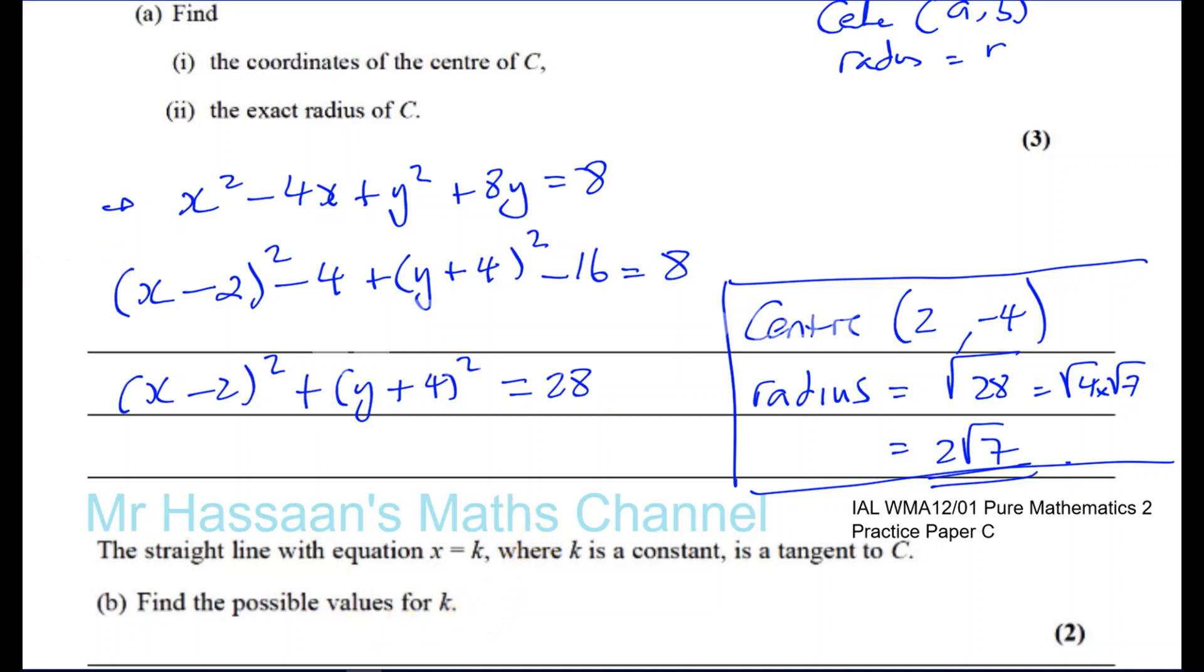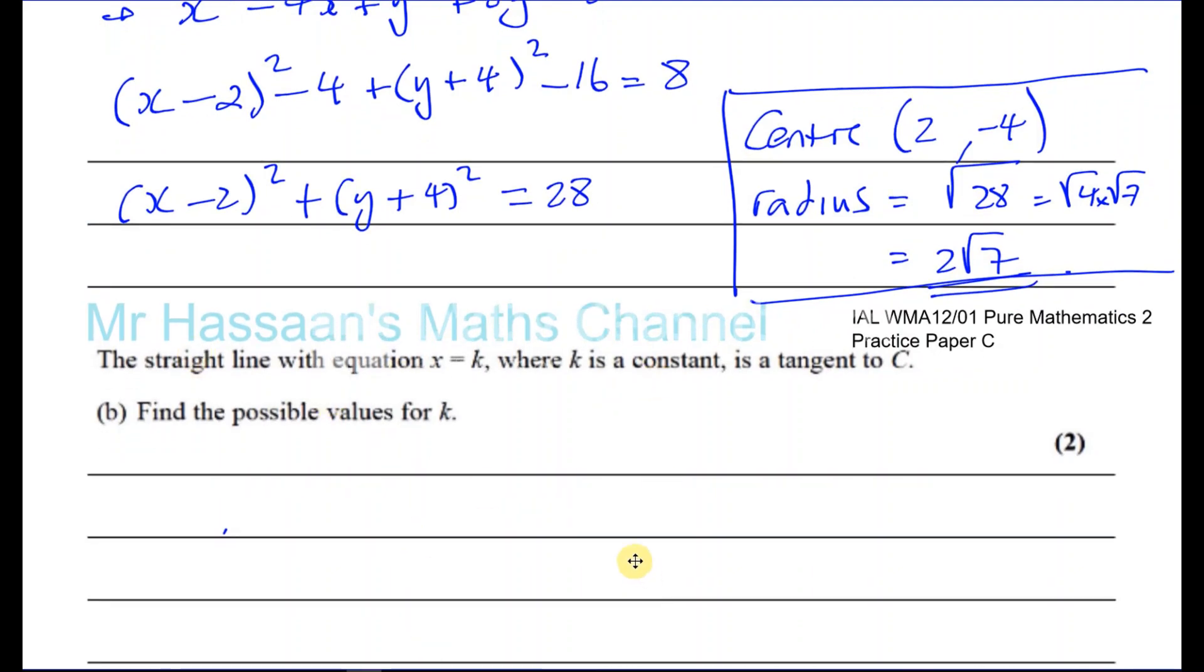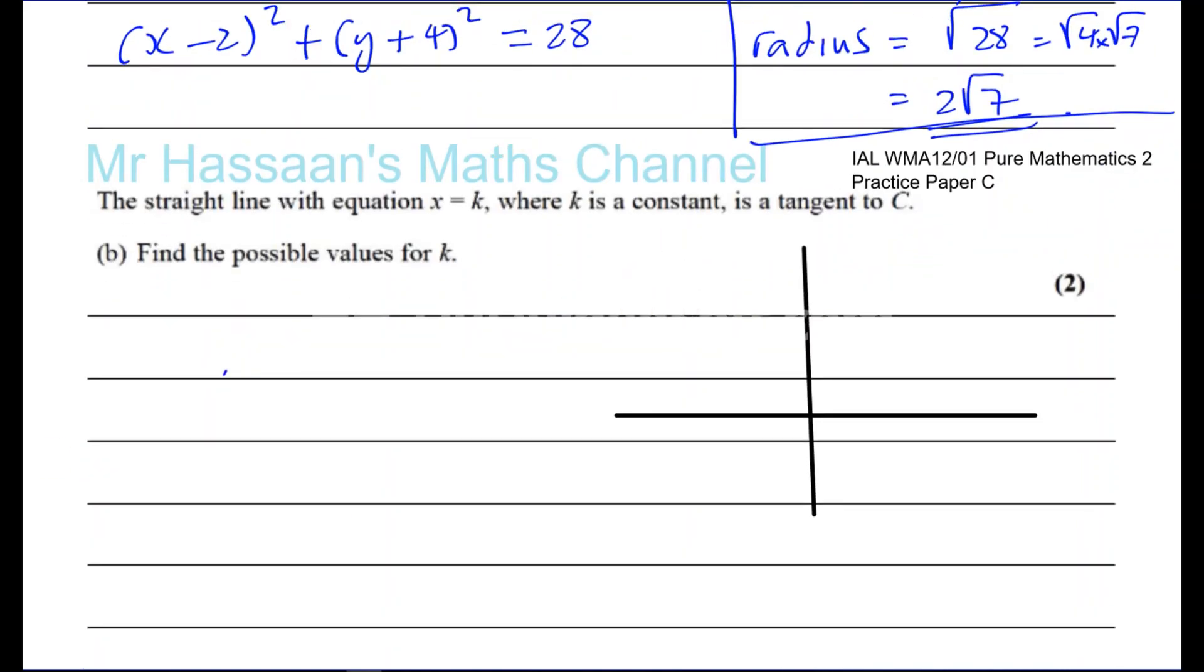This is a question which we could make it really complicated, or we could make it very simple. Because x equals k is a vertical line. If we use our imagination and actually make a sketch, which is really something that's advisable to do in these kind of questions. Sometimes it makes a question a whole lot simpler than it would be if you just try to deal with it purely algebraically.